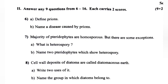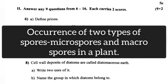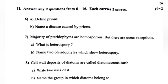Majority of pteridophytes are homosporous, but there are some exceptions. Question 8: What is heterospory? Answer: Occurrence of two types of spores — microspores and macrospores — in a plant.